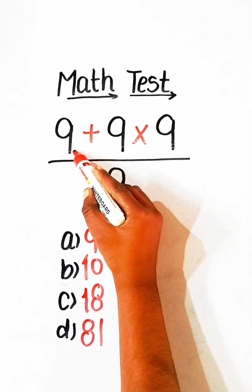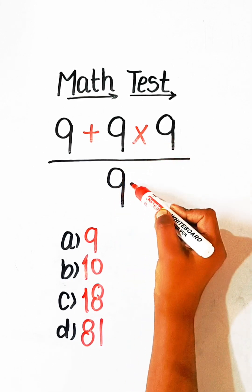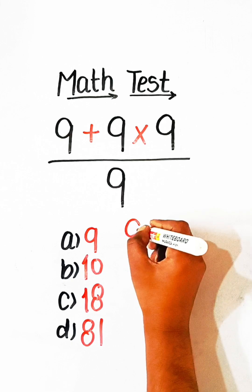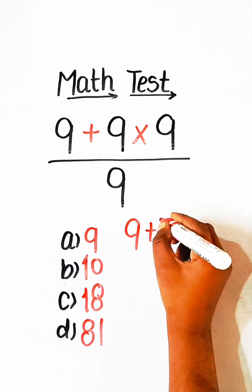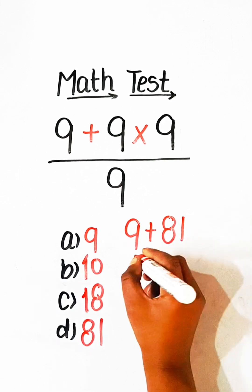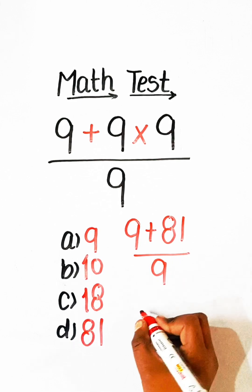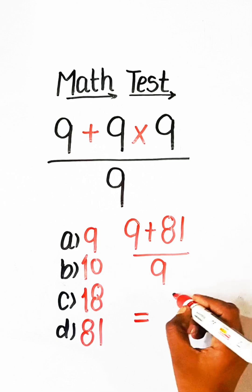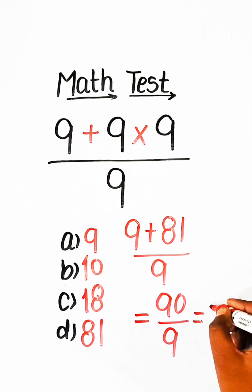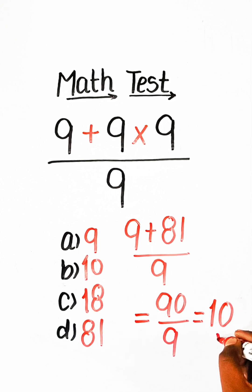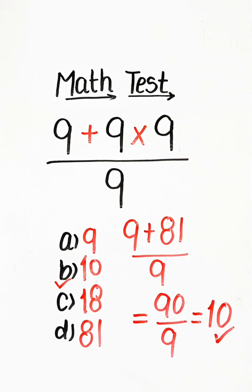We have 9 plus 9 multiplied by 9 upon 9. We will solve the upper part first, so we multiply first: 9 nines are 81. Then 9 plus 81 is 90, upon 9. So we have the answer 10. Option B, 10, will be the correct answer.